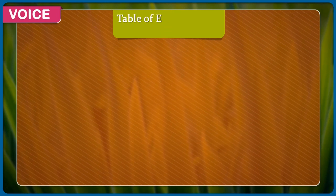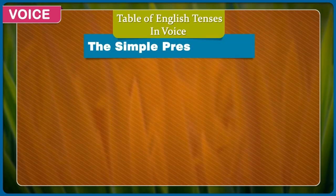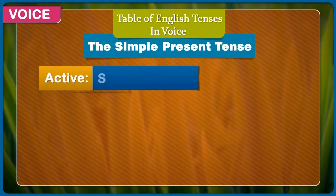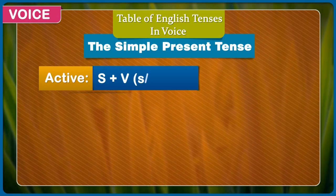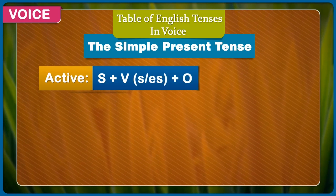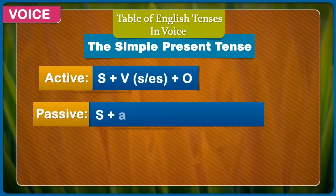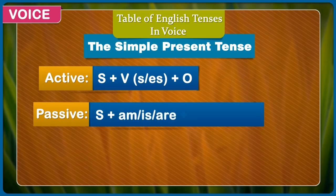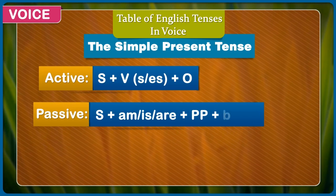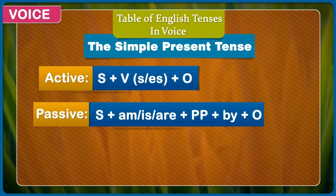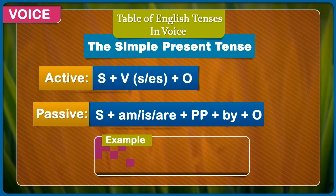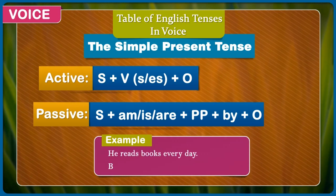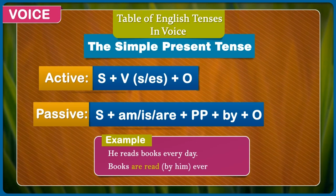Table of English tenses in voice. The simple present tense. Active: subject + verb (with -s or -es) + object. Passive: subject + am/is/are + past participle + by + object. Example: He reads books every day. Books are read by him every day.